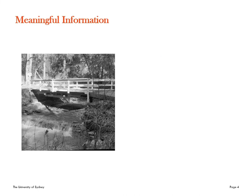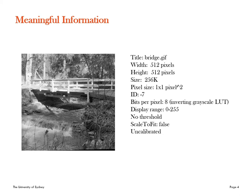Here is a nice photograph of a bridge — I left it in black and white so we don't need to worry about color information. But what meaningful information is present? Well, lots actually. We have information about the name, the width and height of the image, the overall size, how big the pixels are, the bit depth, the display range, amongst lots of other things. This information may be very important if you want to know the size or the name of the image.